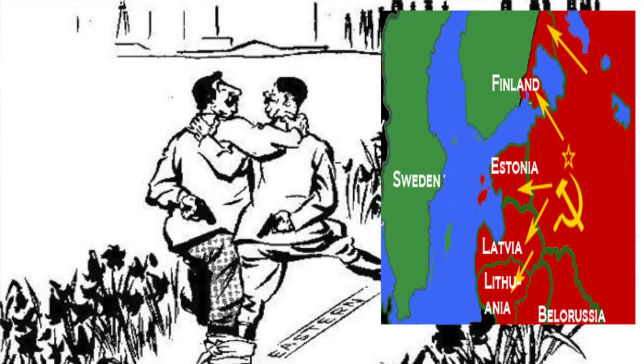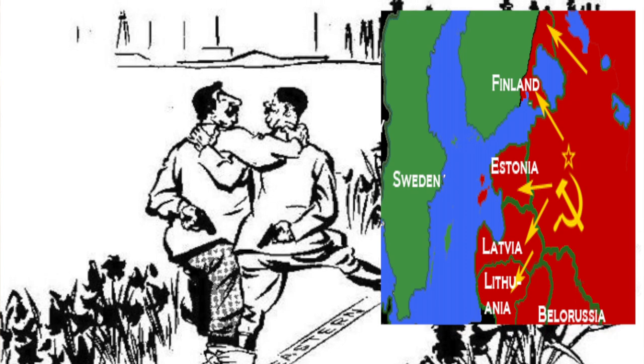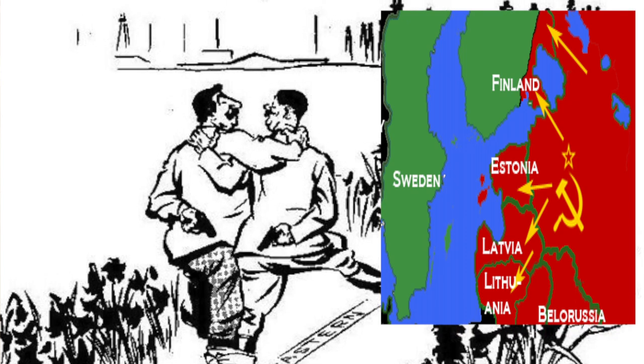Germany would also allow Soviet control of Finland and the Baltic states. Once this pact was signed between Hitler and Stalin, Hitler resumed his demands on the Danzig Corridor. Poland, of course, refused, and Germany started the invasion. At that moment, France and Britain declared war on Germany. So, on 1st September 1939, World War II started.